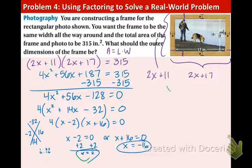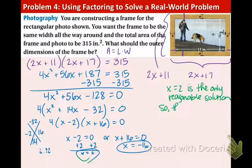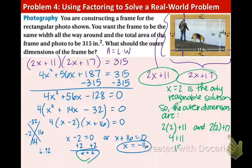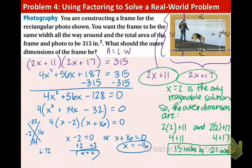So like we said, x equals 2 is the only reasonable solution because it's positive. So, the outer dimensions are 2 times 2 plus 11 and 2 times 2 plus 17. As you can see, we're just using these values and plugging in 2 for the x. 4 plus 11 is 15 and 4 plus 17 is 21. So, that means the dimensions are 15 inches by 21 inches. We made it. We did the hardest problem.